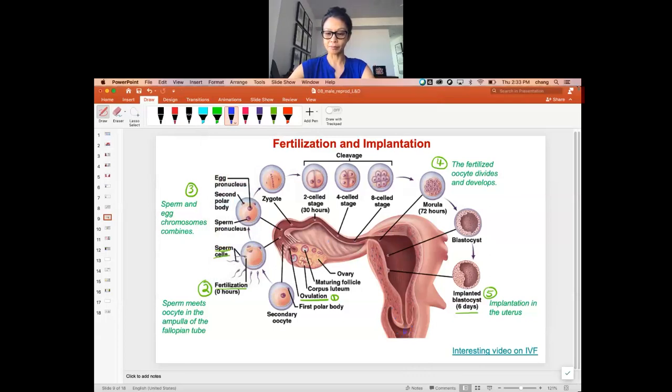The sperm has to swim all the way up through the vagina and into each of the fallopian tubes. One half is probably going to go to the other fallopian tube, and that fallopian tube most likely will not have an egg.